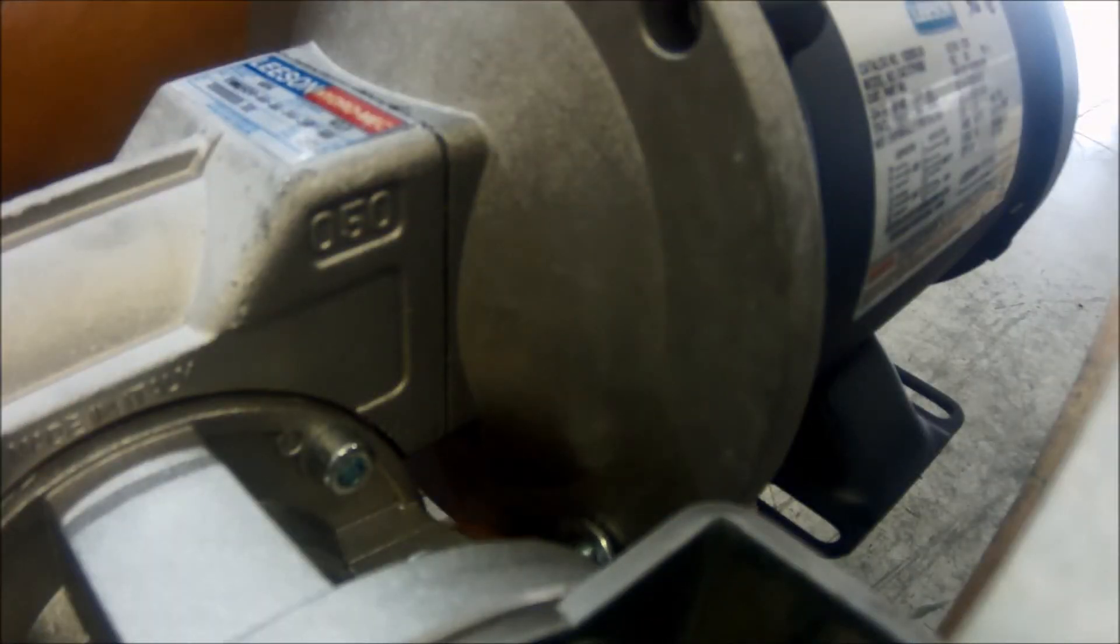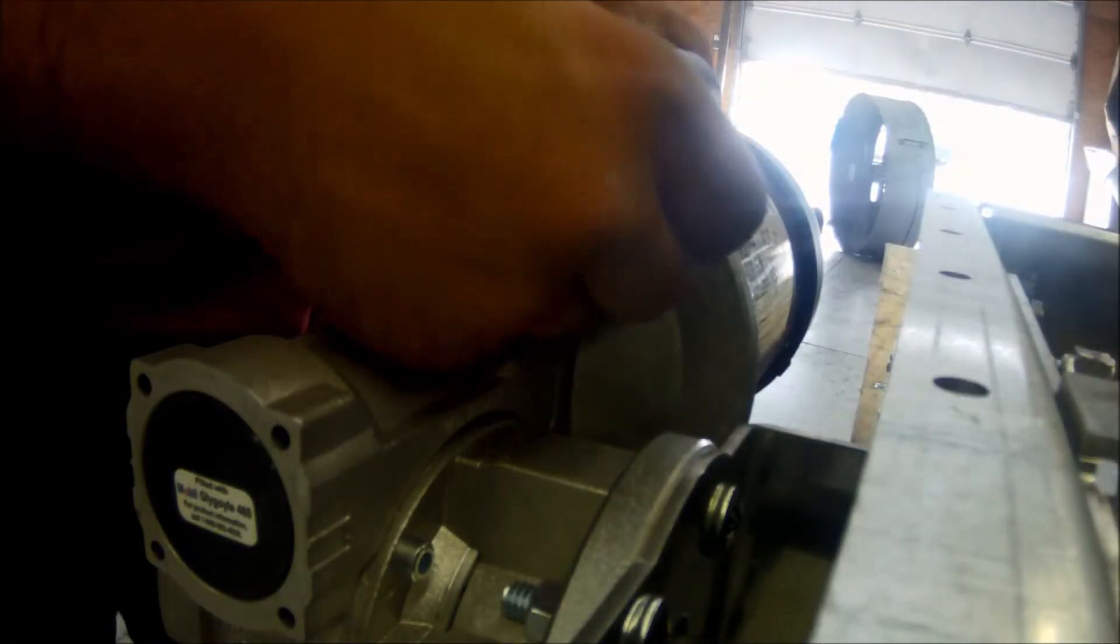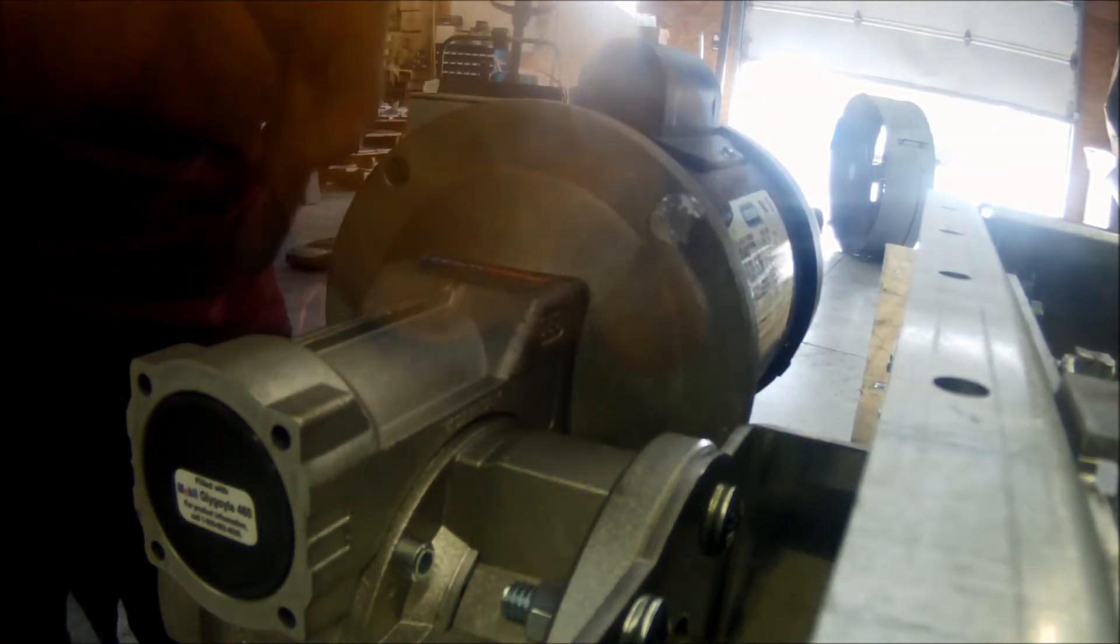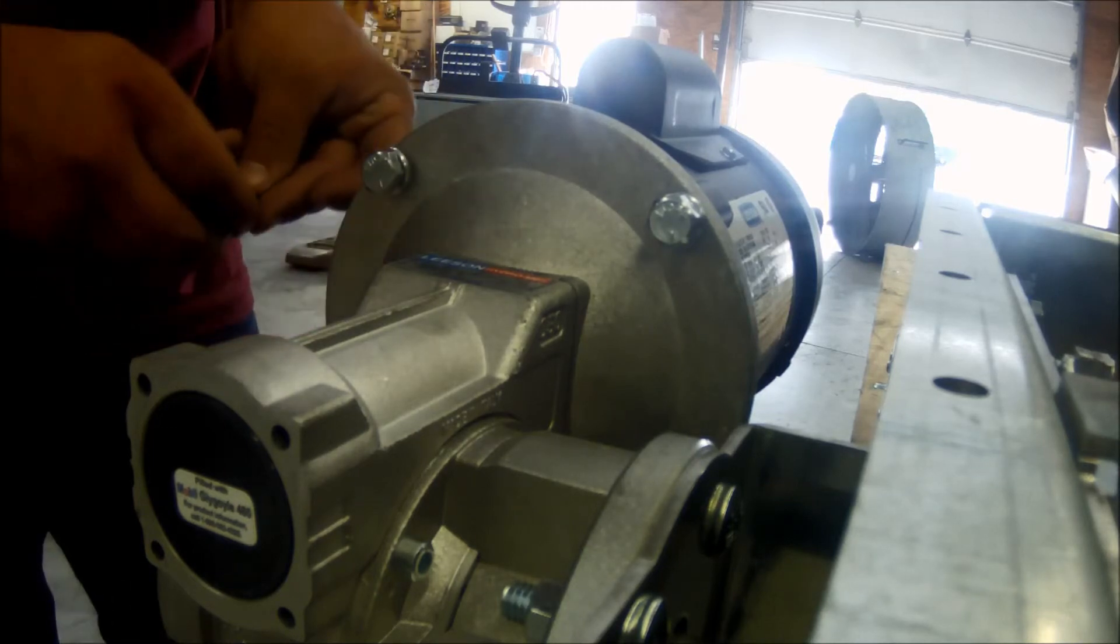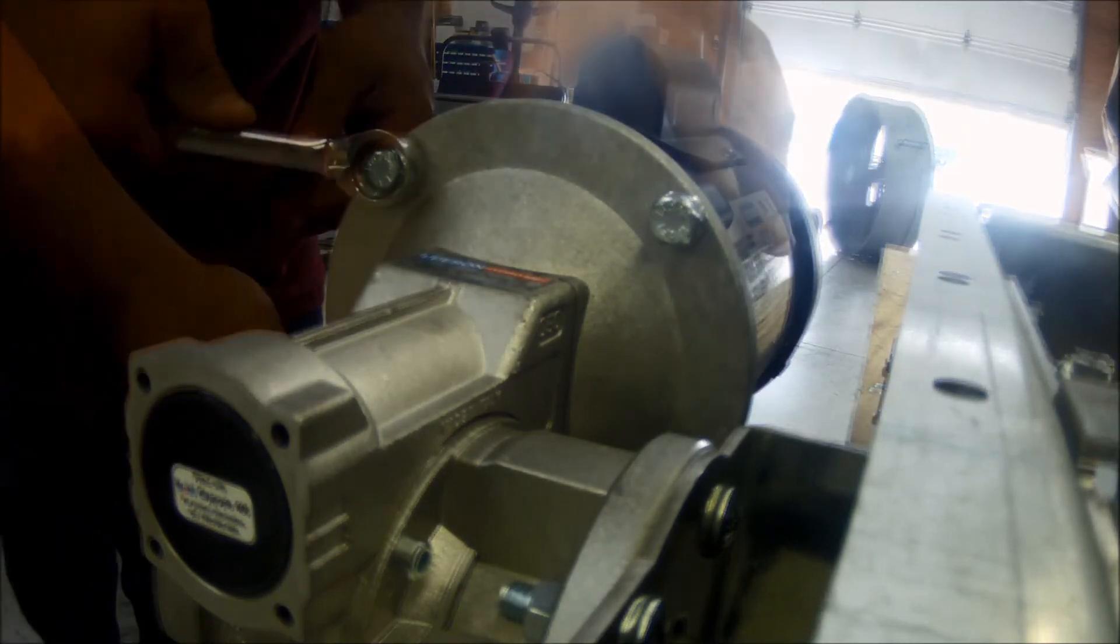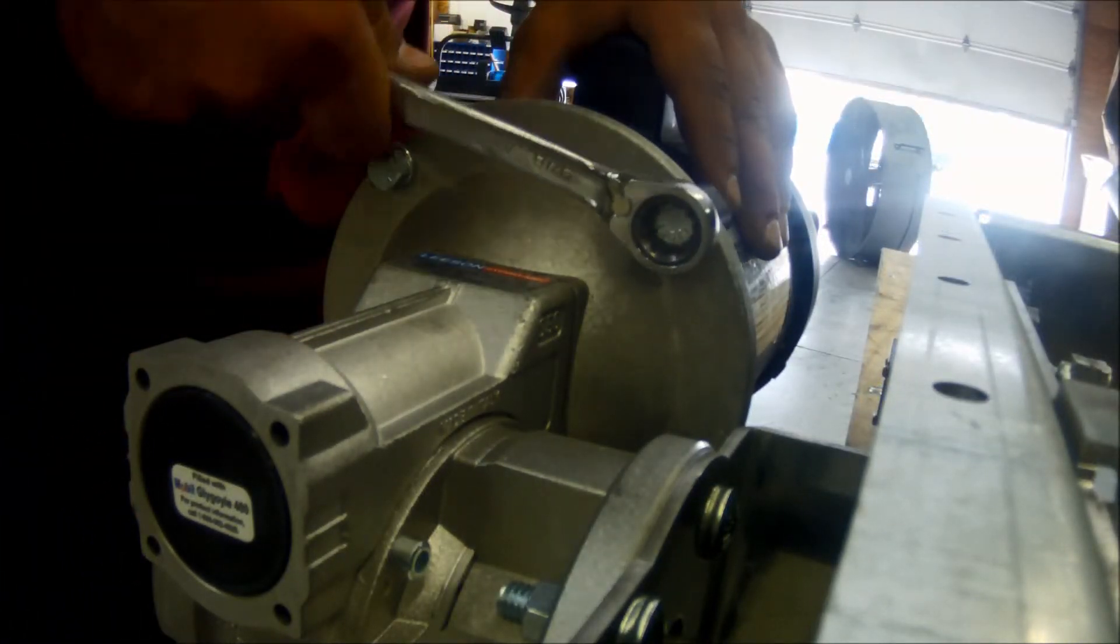Start by tightening the 3/8 bolt that came already in the gearbox. Insert the rest of the 3/8 bolts around the mounting plate. And lastly, tighten all of the bolts.